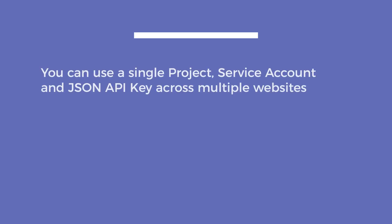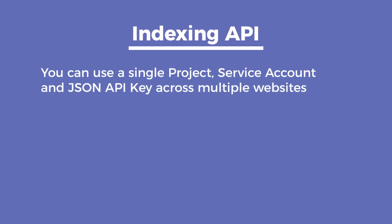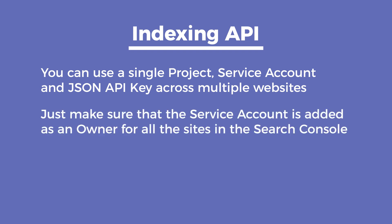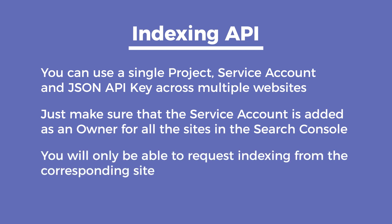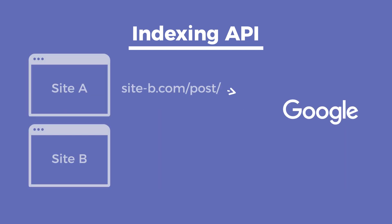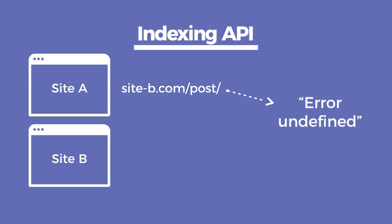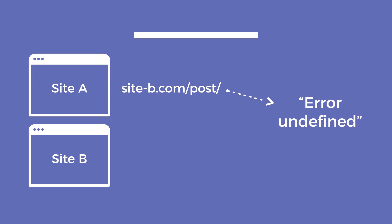You can use a single project, service account, and JSON API key among multiple sites. Just make sure that the service account is added as owner for all the sites in the Search Console. Also, you will only be able to request indexing from the corresponding site — using the plugin on Site A to request a crawl for Site B will not work; it will result in an error: undefined response.